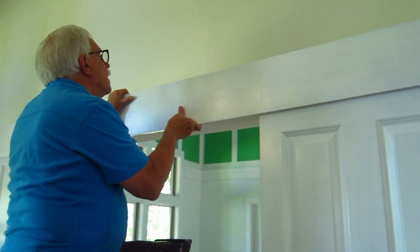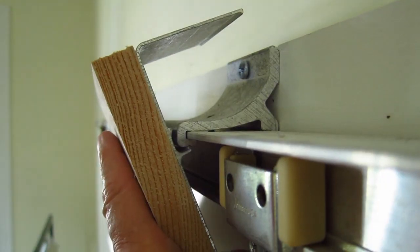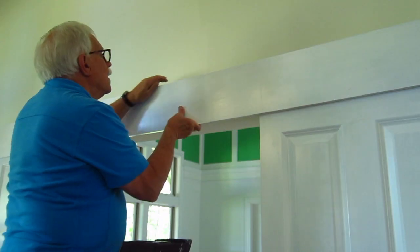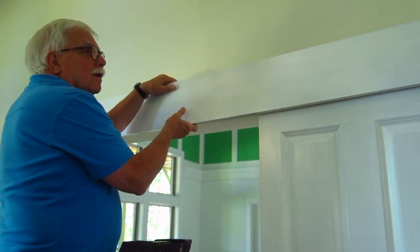tilt the bottom of the fascia board in towards the wall and engage the wall-mount hardware. Then rotate the top of the fascia towards the wall until the top of the bracket snaps into place. It's so easy.